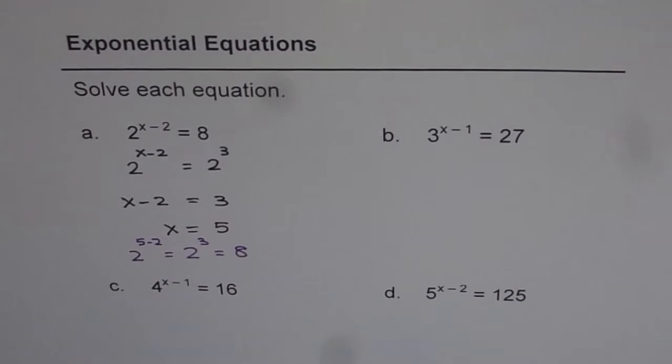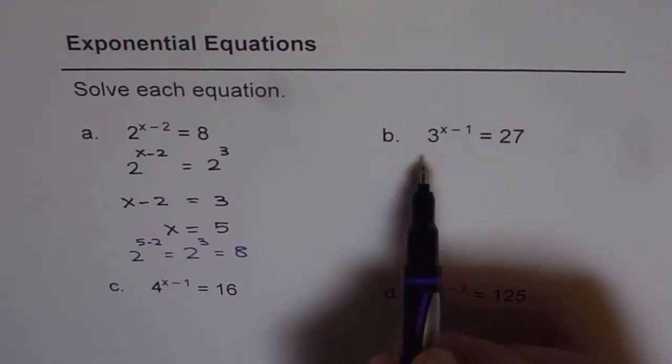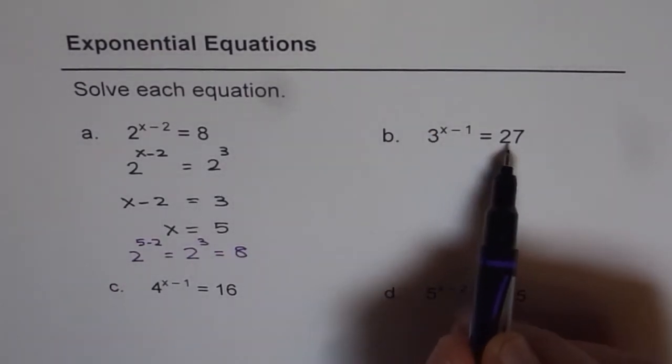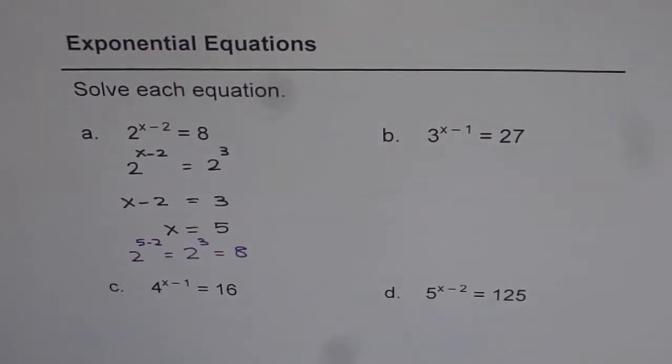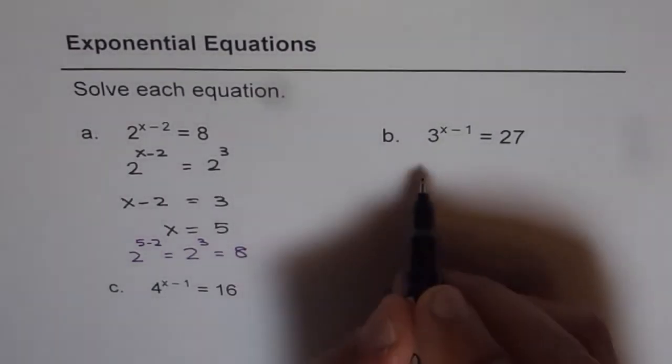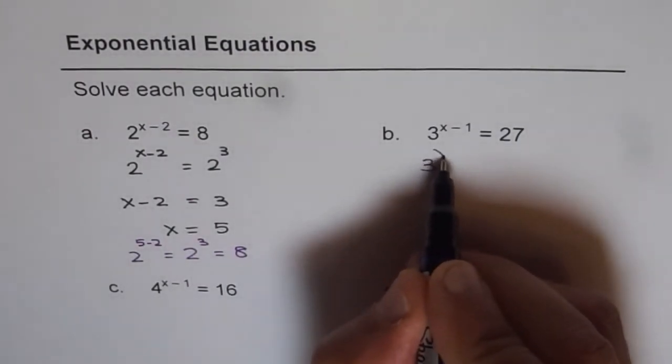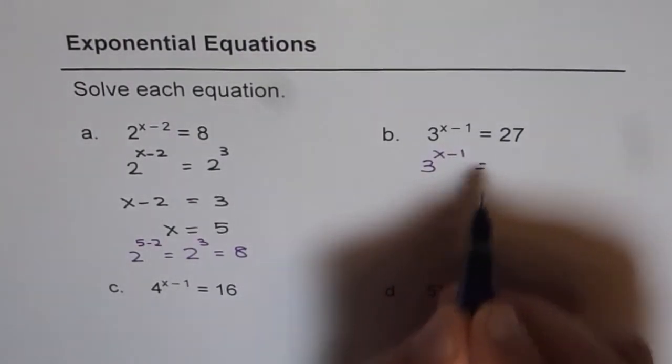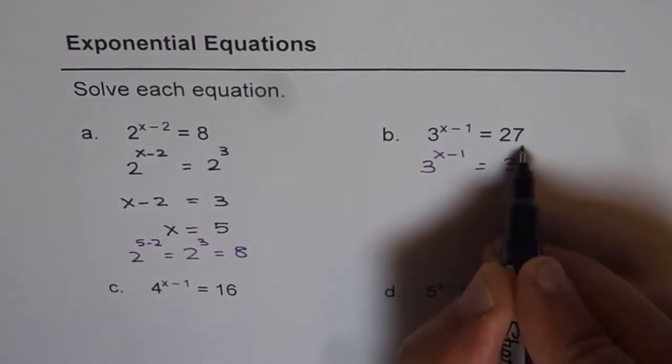Let me do one more for you. So this one is 3 to the power of x minus 1 equals 27. Now how can you write 27 as a power of 3? That is what you need to think about. 3 to the power of 3 is 27. Therefore, we can write this equation as 3 to the power of x minus 1 equals 3 to the power of 3.